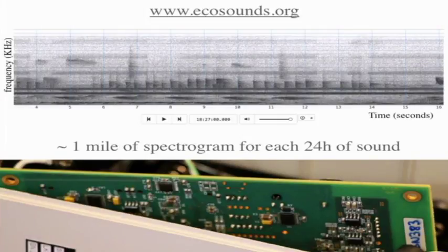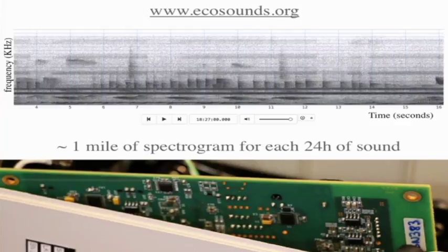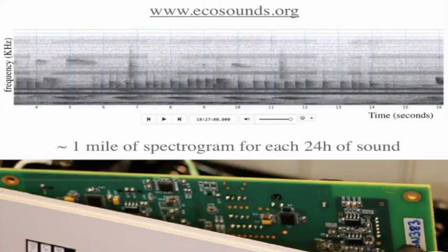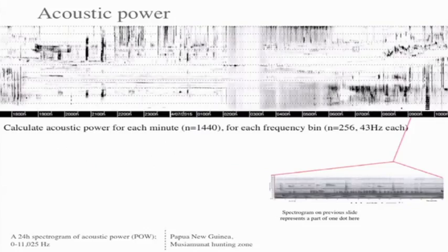All of our data is available for looking at as spectrograms or listening to on the website ecosounds.org. These spectrograms, where you translate the sound data into frequency and time, are also not really practical — if you were to print a spectrogram for 24 hours, it would be about a mile long. So we couldn't look at every single site at every single time point, and we had to compact the data. We calculated various indices, and the one I'll talk about today is acoustic power.